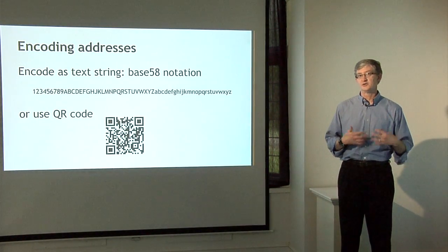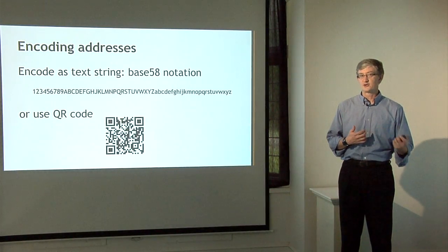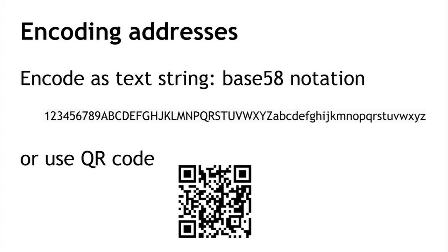There are two main ways that addresses are encoded or conveyed. The first is as a text string: we take the bits of the key and encode it as a number in base 58 notation, using 58 characters — all digits, capital letters, and small letters, except a few that might be confusing, like capital O and zero, which look too much alike.